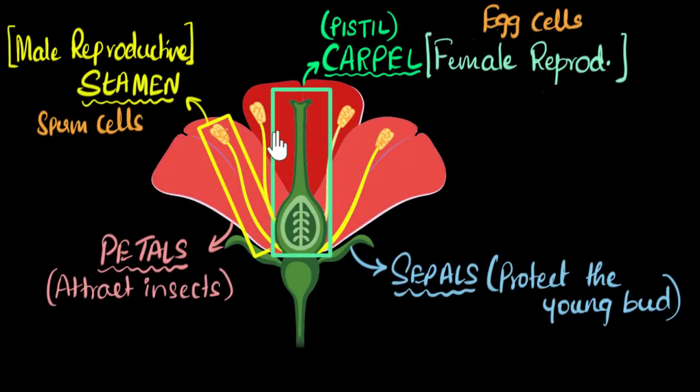Let's talk about the different parts of the carpel and the stamen, and we'll see how to remember them as well. So in a previous video, we spoke about the four major parts of the flower, and we also saw what they do.